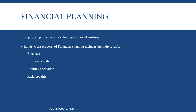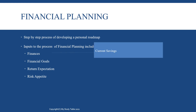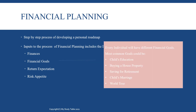Coming to the concept of financial planning — it refers to the step-by-step process of developing a personal roadmap: what are your financial goals and what are the ways in which you want to achieve them. The inputs to the process of financial planning include the individual's finances, which is their current savings, and their financial goals. Common financial goals include a child's education or marriage, buying a house or a car, saving for a retirement fund, a world tour or a holiday.